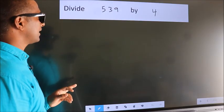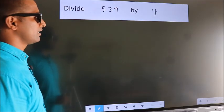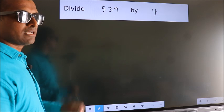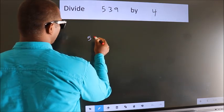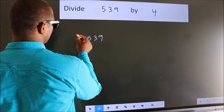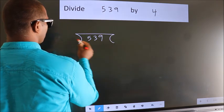Divide 539 by 4. To do this division, we should frame it in this way. 539 here, 4 here.